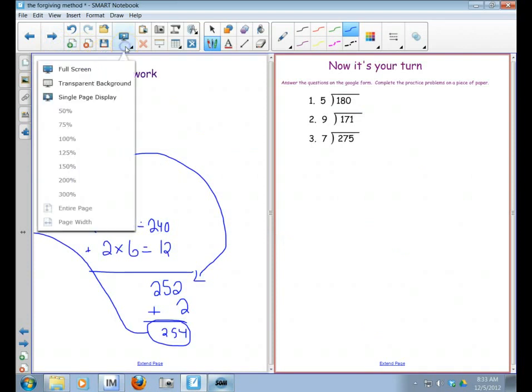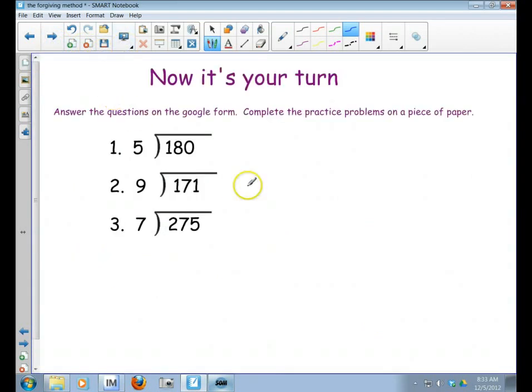So now it's your turn. I want you to answer these practice problems on a piece of paper, and there's also some questions on the Google form. I mentioned some important vocabulary words that I want you to pick out: divisor, dividend, and quotient. Quotient is your answer. So those are important words for you to know what they mean. So go ahead and fill out the Google form and complete the practice problems. Thanks, bye.